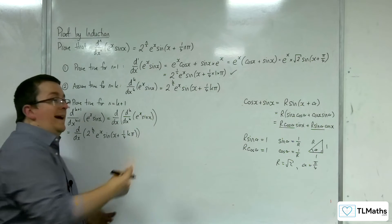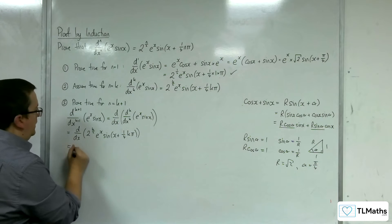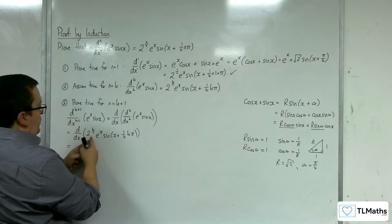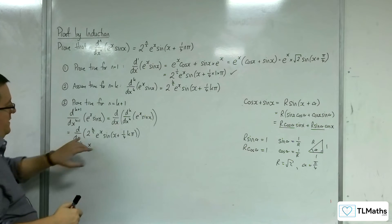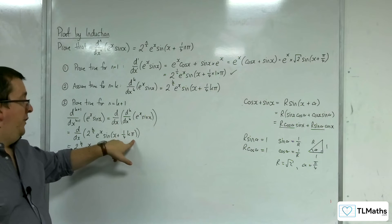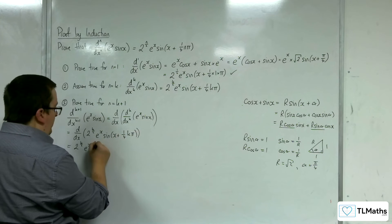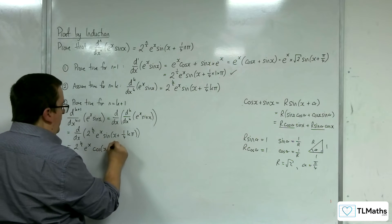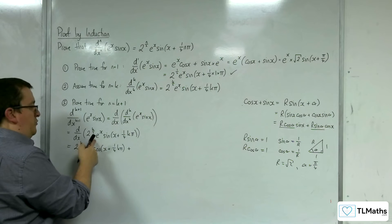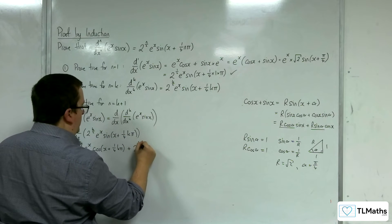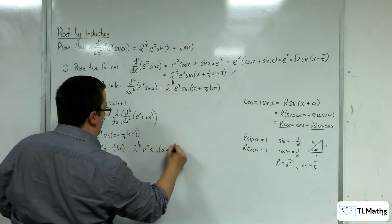Now remember here, k is a constant. It's not a variable, so I can treat it just like any old number. So this 2 to the k over 2 times e to the x now multiplies with the derivative of sine of x plus 1 quarter k pi using the product rule. So the derivative of the inside is just 1. So this is cosine of x plus 1 quarter k pi plus the second times the derivative of the first. Now the derivative of the first is just 2 to the k over 2 e to the x. And so we've got sine of x plus 1 quarter k pi.